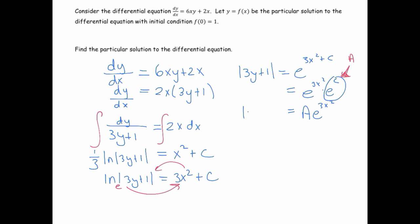e to the 3x squared. And again, the absolute value of 3y plus 1 is going to be plus or minus a e to the 3x squared, but again that a is yet to be determined, so I can just write this as a e to the 3x squared. So now we can solve for y. If I subtract 1 and divide by 3, I've got that y equals a e to the 3x squared minus 1 divided by 3.